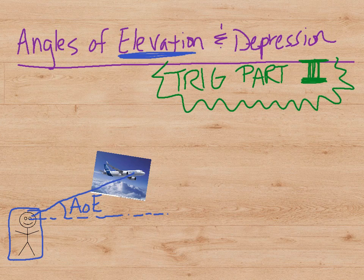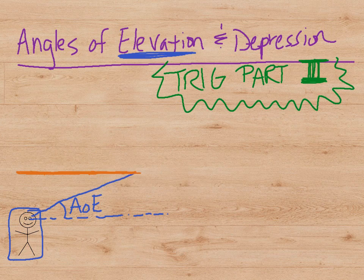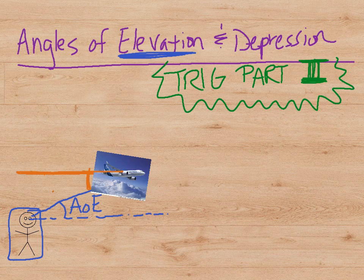Now picture it the other way and think that you were in the airplane yourself. Your vision is looking straight ahead. And if you wanted to look at the view down below, you would have to drop your eyesight down right about here. And then you would end up having the angle of depression.